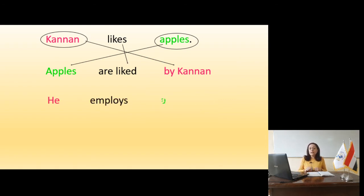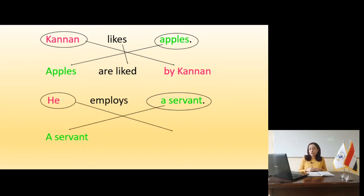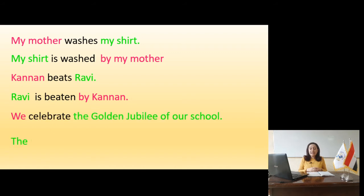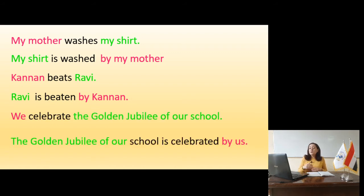Moving to slide 9 — another example: 'My mother washes my shirt.' My shirt is the object, so begin with that. The tense is present simple, and 'my shirt' is singular, so use 'is.' Then past participle: washed. Result: 'My shirt is washed by my mother.'